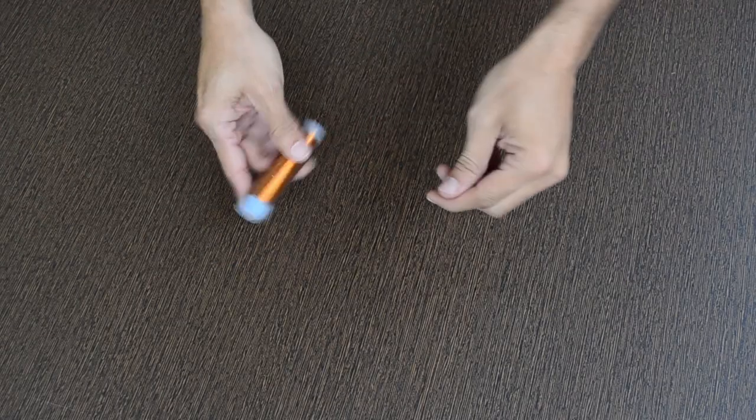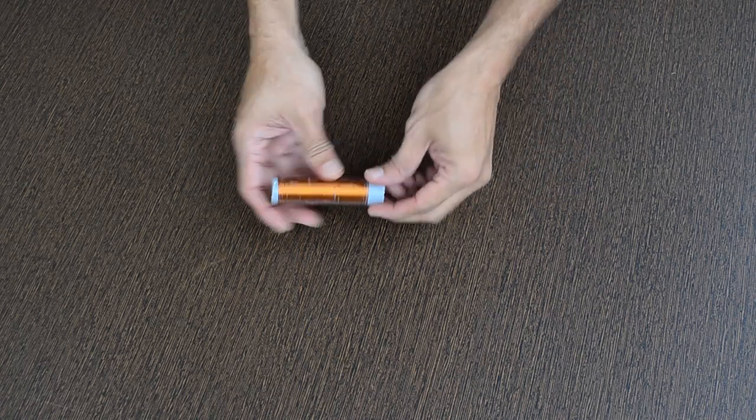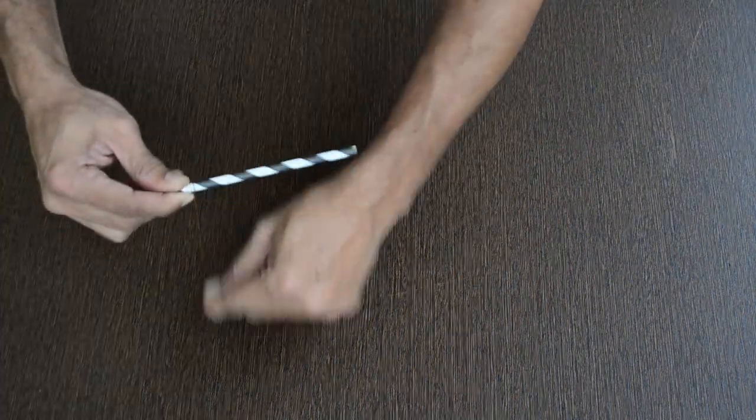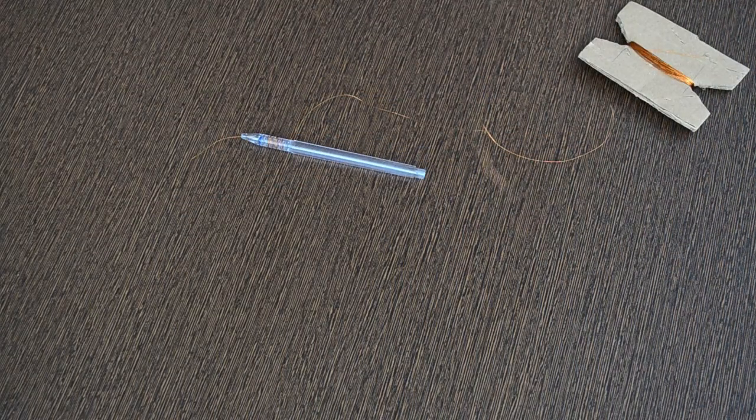You can also build a solenoid with coated copper wire bound around a pipe, or you can use paper straw or pen instead of pipe for the same.